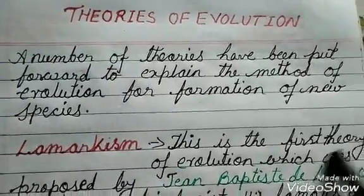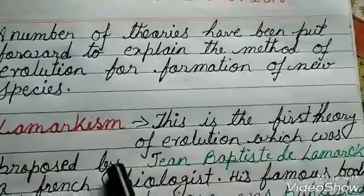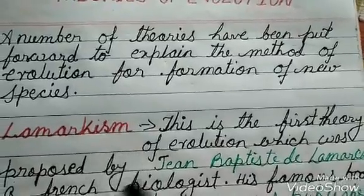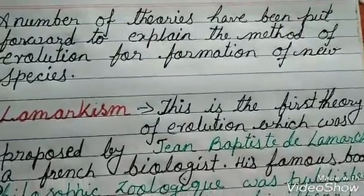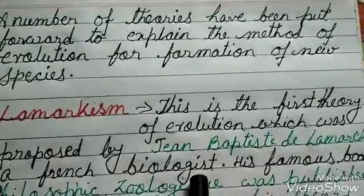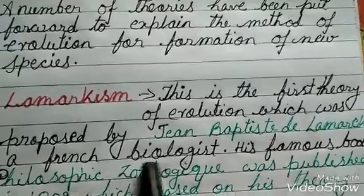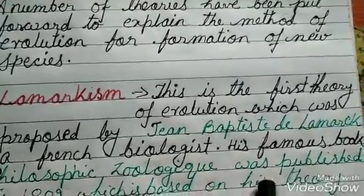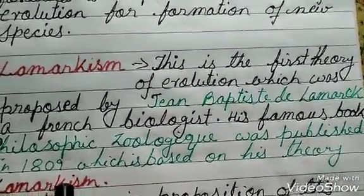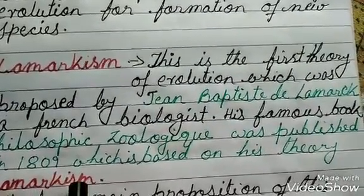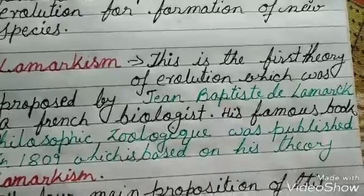This is the fourth theory of evolution, which was proposed by Jean-Baptiste de Lamarck, a French biologist. His famous book, Philosophie Zoologique, was published in 1809, and is based on his theory of Lamarckism.